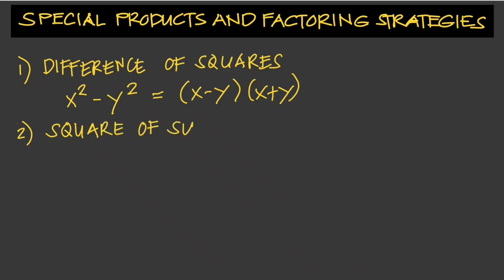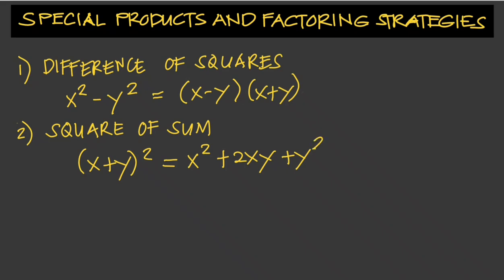The next one is the square of sum. We can write this as x plus y squared, which is equal to x squared plus 2xy plus y squared.